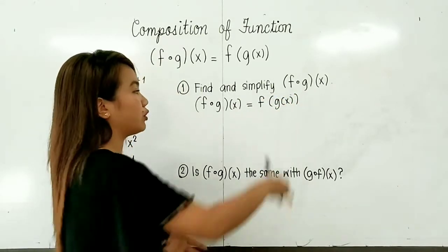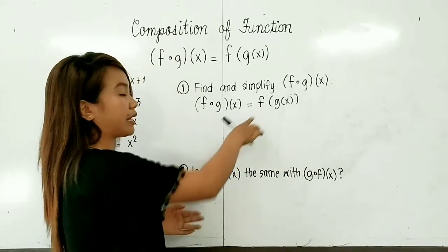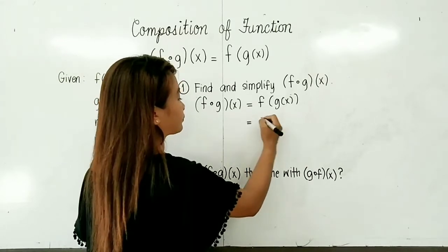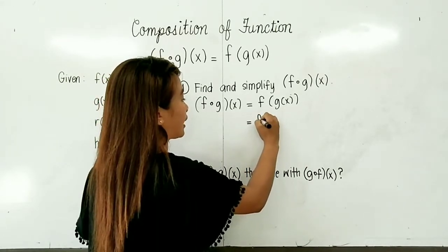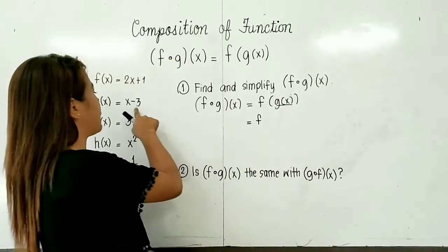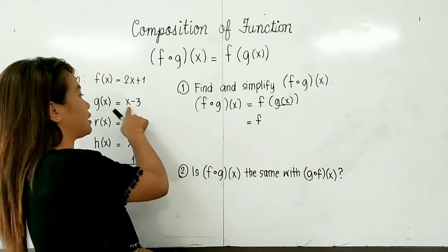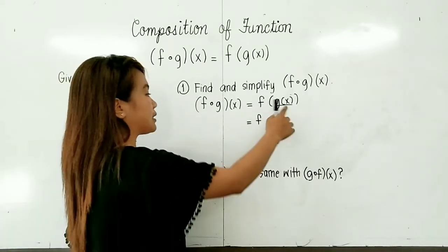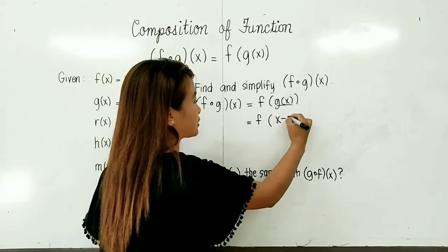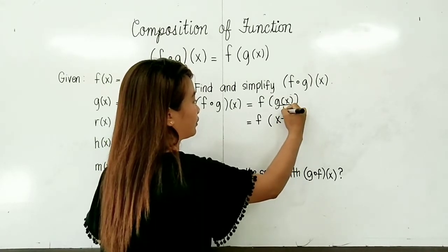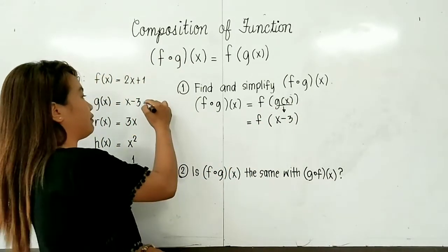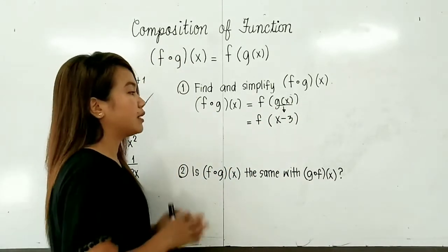This means we will put the function g of x into the function f of x. First, we will write just f and replace g of x with the given function. So g of x is equal to x minus 3, and we will write x minus 3 here, because our g of x is equal to x minus 3 as given.